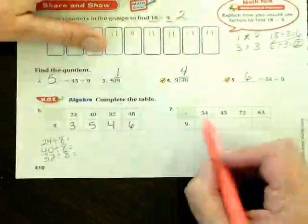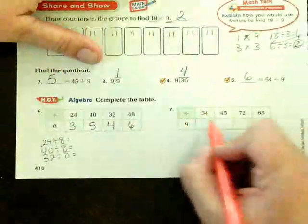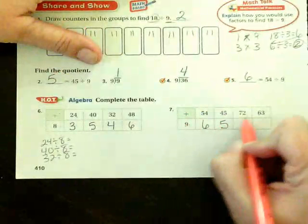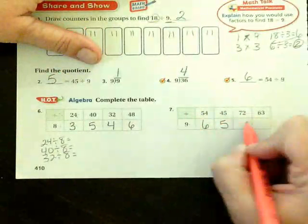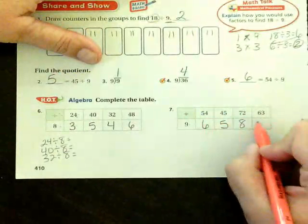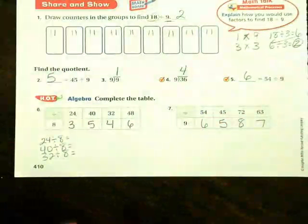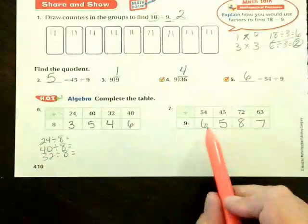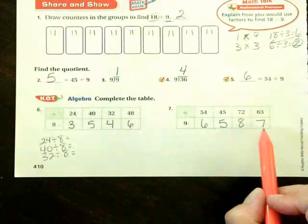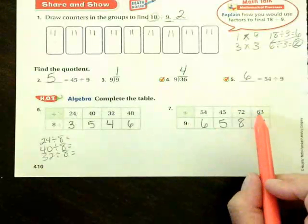Over here, 54 divided by 9, 45 divided by 9, 72 divided by 9, and 63 divided by 9. Do you see a pattern over here? I kind of do.